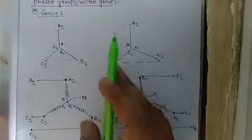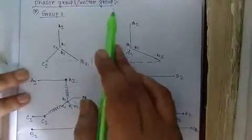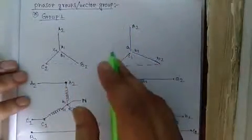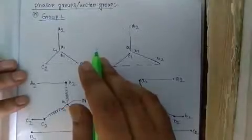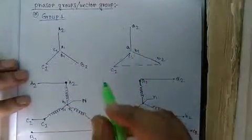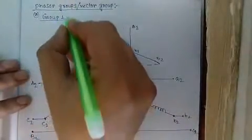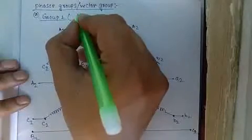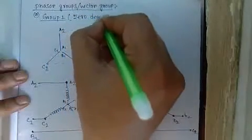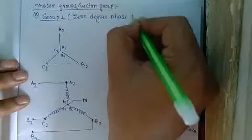Today I discuss the phasor group or vector group of a three-phase transformer. There are four number of groups. Group number one is zero degree phase displacement.